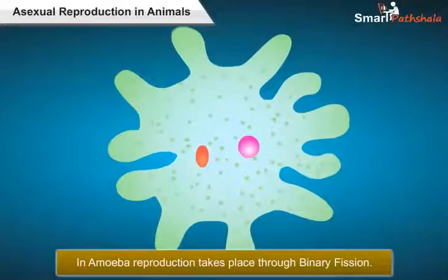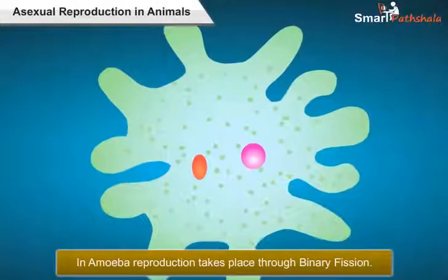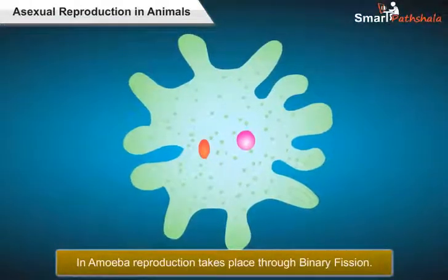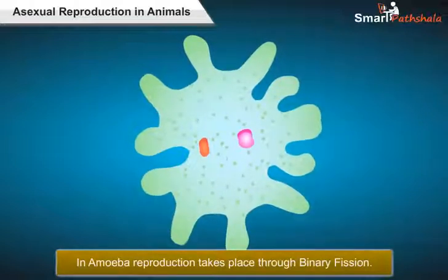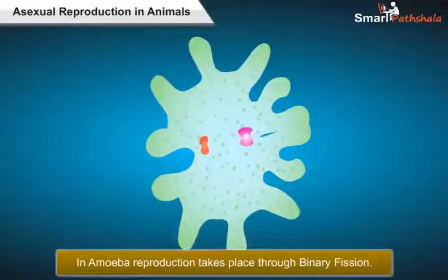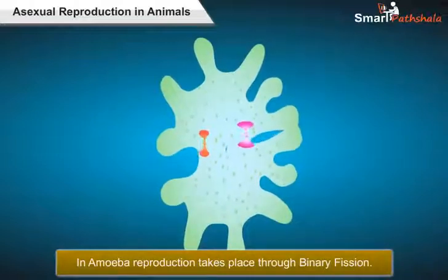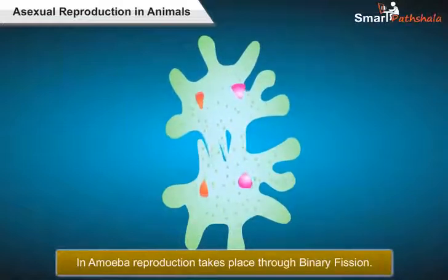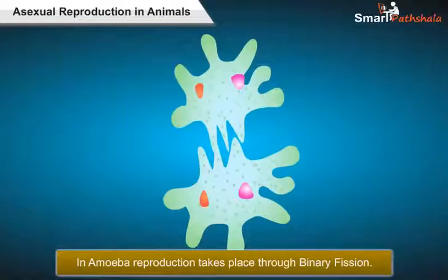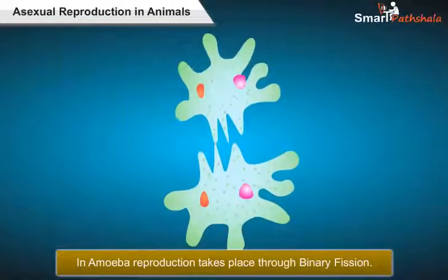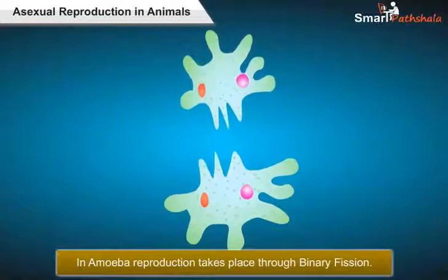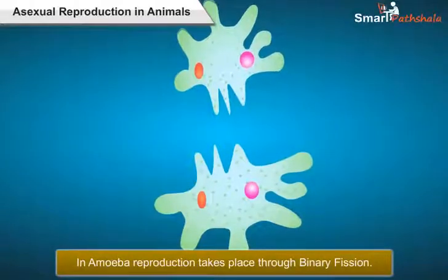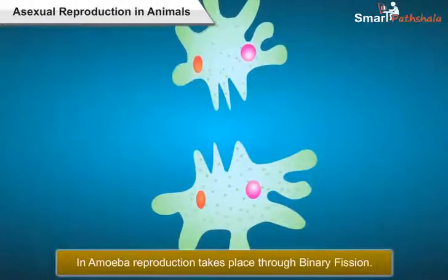Now let us learn how reproduction takes place in amoeba, which is a single-celled microscopic organism. In amoeba, reproduction takes place through binary fission, which is a type of asexual reproduction. In this process, the nucleus of the amoeba first divides into two daughter nuclei, followed by the division of the body into two parts, with each part receiving one daughter nucleus. This type of asexual reproduction in which an animal reproduces by dividing into two individuals is called binary fission.